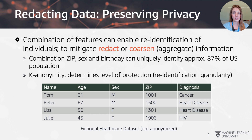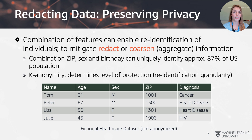As a side fact, the combination of zip code, sex, and birthday can actually uniquely identify approximately 87% of the US population. So if you have those three features in your dataset, you can re-identify 87% of the US population. Clearly, we want to bring that data up to a coarser level and have fewer uniquely identifiable individuals in the dataset.